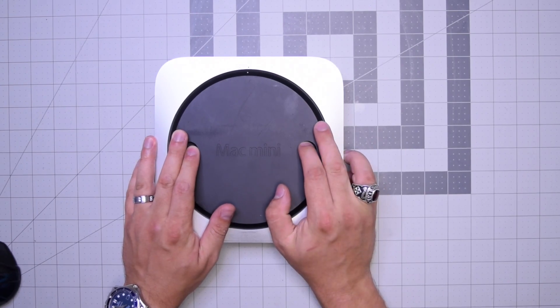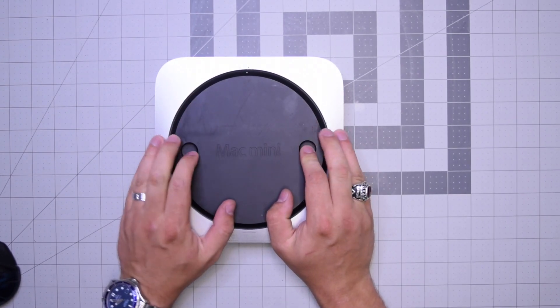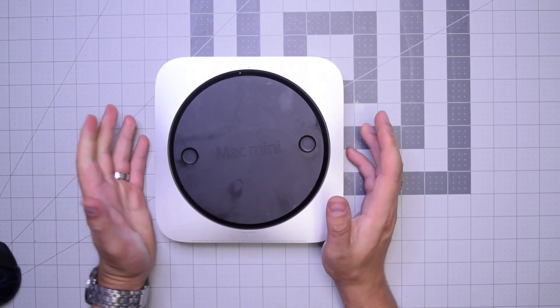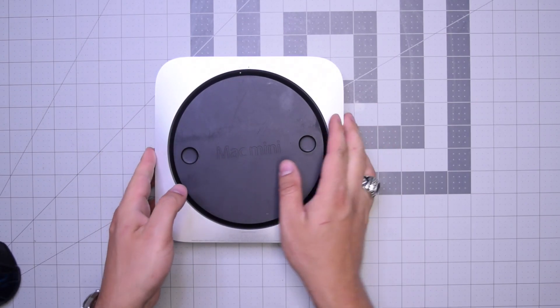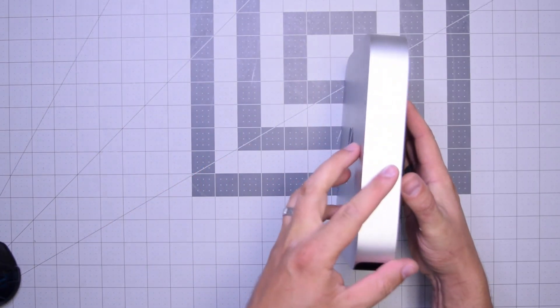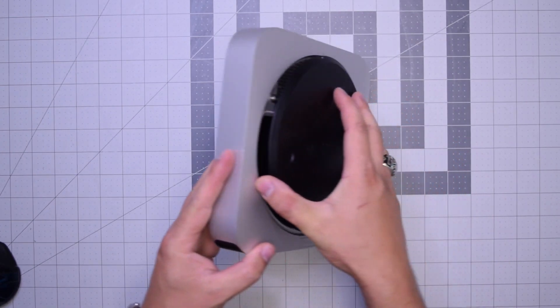What we want to do is put both fingers on the left and right and twist it counterclockwise about a quarter of an inch, and then we can tip the unit over and remove the rear cover.